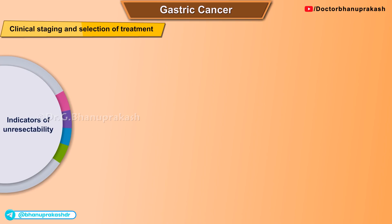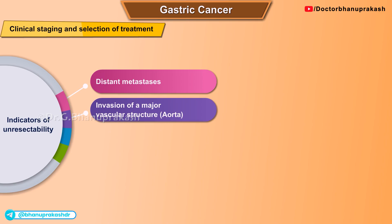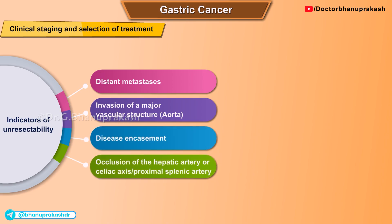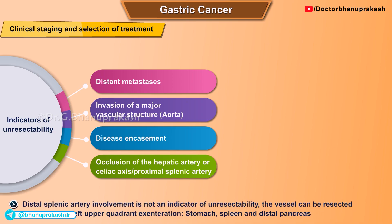The widely accepted criteria of unresectability for gastric cancer are the presence of distant metastasis and invasion of a major vascular structure such as the aorta, disease encasement or occlusion of the hepatic artery, celiac axis, or proximal splenic artery. Distal splenic artery involvement is not an indicator of unresectability, as the vessel can be resected and blocked with a left upper quadrant exenteration of the stomach, spleen, and distal pancreas.